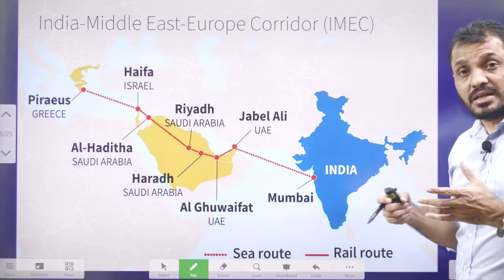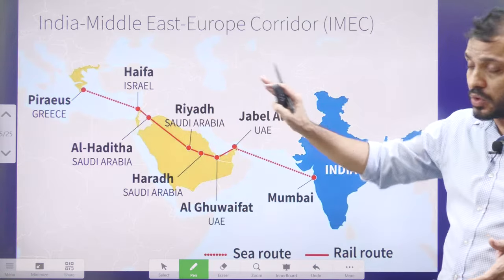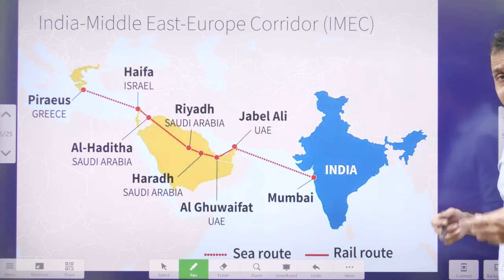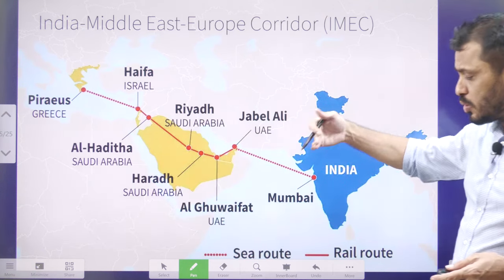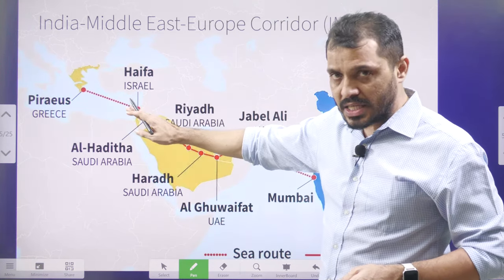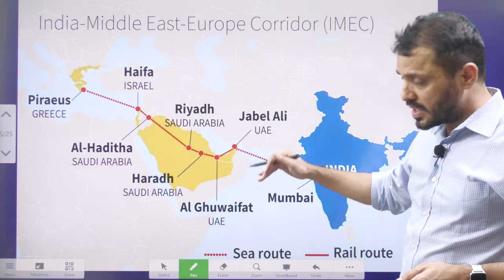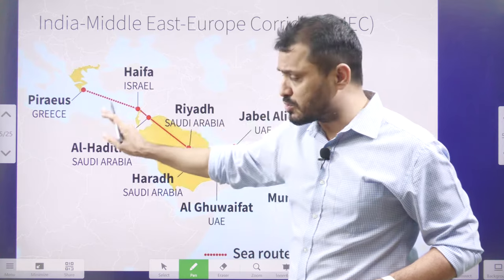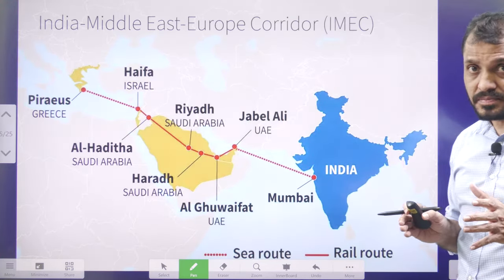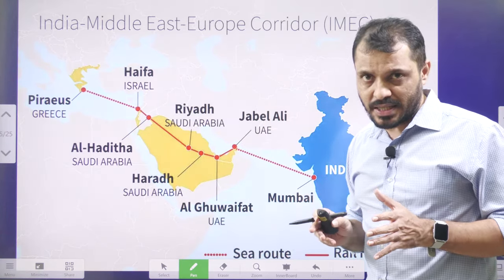This particular corridor goes from India to UAE and through Saudi Arabia till Israel — it is a railway link. India to UAE is a shipping lane, and from Israel to Europe it is again a shipping lane. So this project consists of both a railway as well as a shipping part — two parts are there.